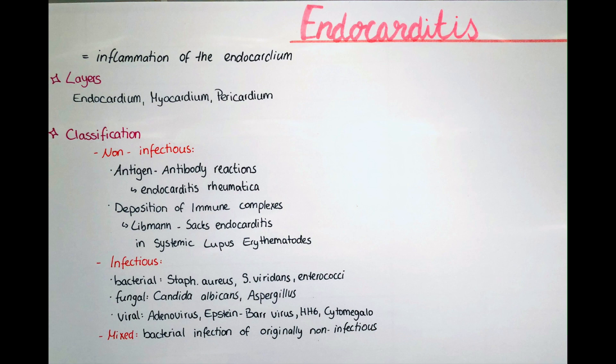The non-infectious form is also called abacterial, and there we can either have an antigen-antibody reaction — for example in endocarditis rheumatica, which is the most common form of endocarditis. It usually occurs two weeks after infection with beta-hemolytic group A streptococcus, and there we have wart-like vegetations. Vegetations are small clumps consisting of fibrin and thrombocytes, primarily deposited at the mitral and aortic valves.